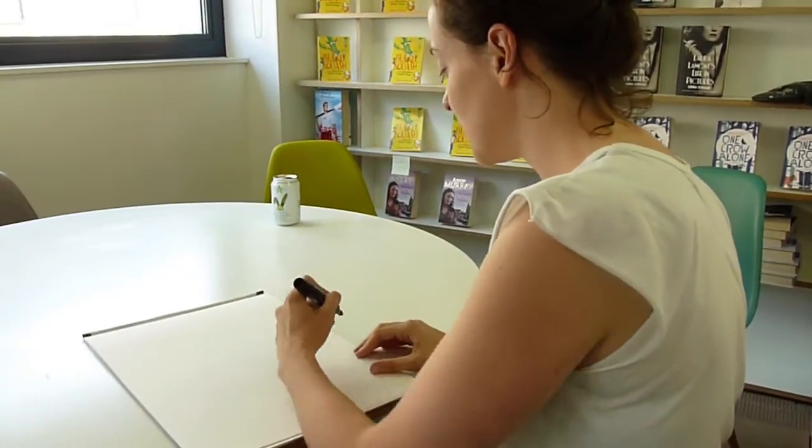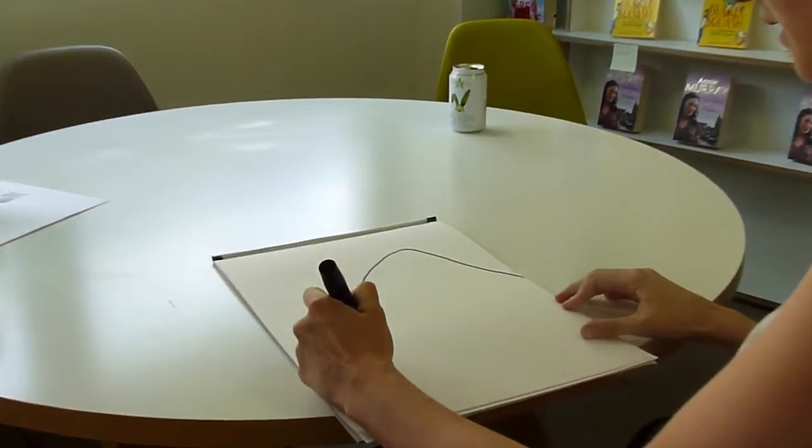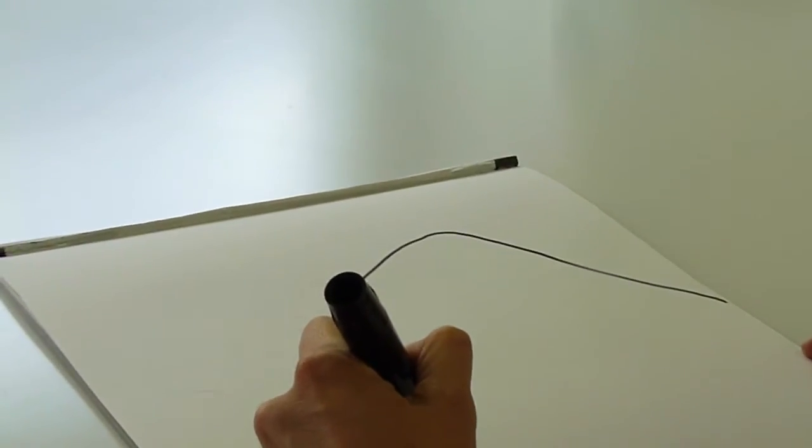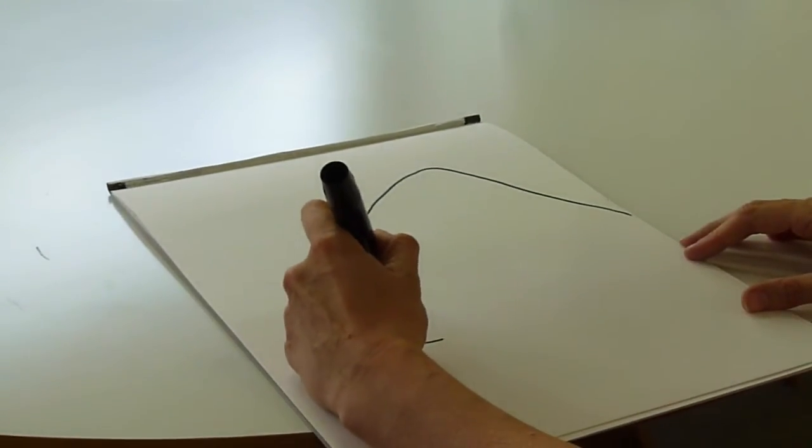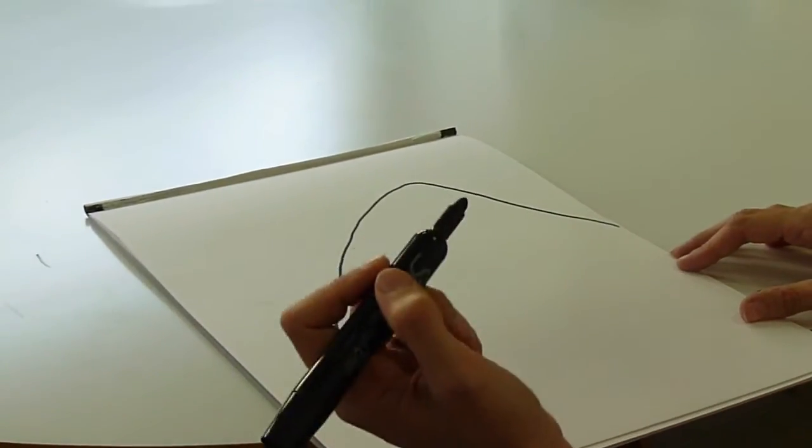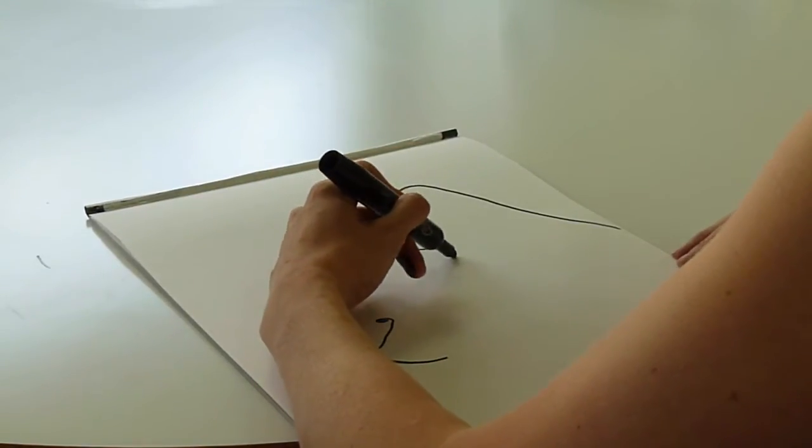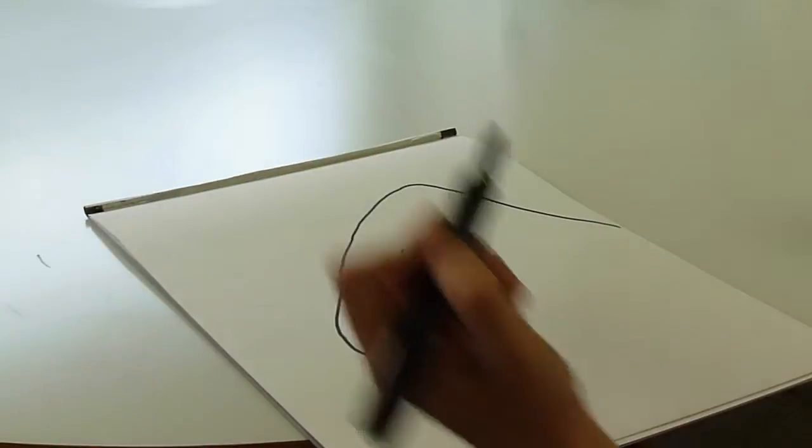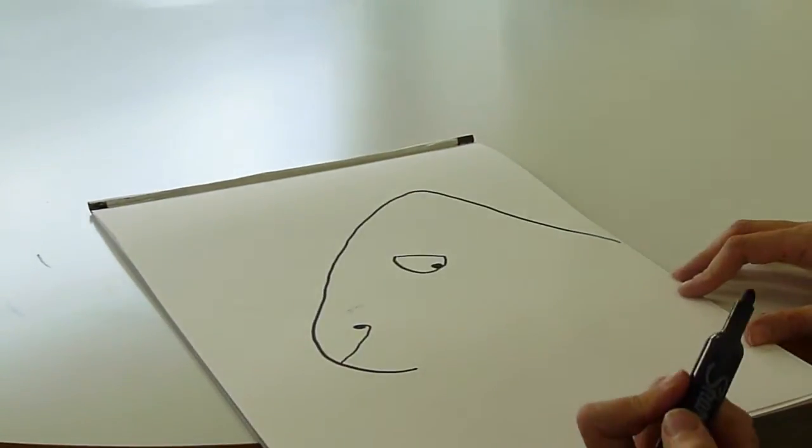Okay, so I'm going to start with a sort of outline of her face, just sort of like that, and give her a little nostril. And because she's incredibly sad, she's going to be kind of looking down to the side, like that.